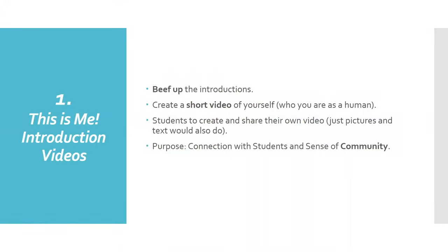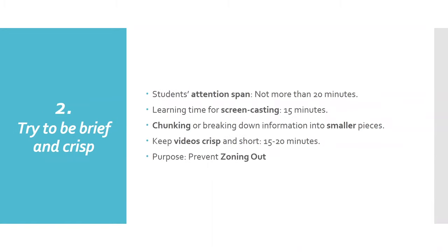We now move on to strategy number two: try to be brief and crisp. The student's attention span is not more than 20 minutes, and the learning time for screencasting is short too — that is 15 minutes. Hence, in order to prevent your students from zoning out, it is important to chunk or break down information into smaller pieces. It will help you organize your content in a logical way. So be careful to keep the videos crisp and short, maybe ranging between 15 to 20 minutes.